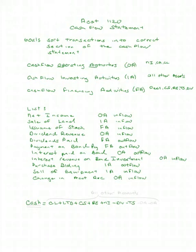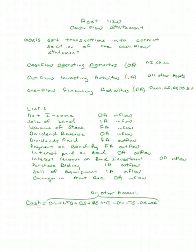Part of learning how to do a cash flow statement is learning how to sort the change in accounts into the appropriate section. You can calculate the change in cash by looking at the change in every other account. If you put the change of every account into the cash flow statement and you don't leave one off — not one — then you will have captured the change in cash. If you look at the change in every account and put it in its right section of the cash flow statement, you will have easily captured the change in cash.